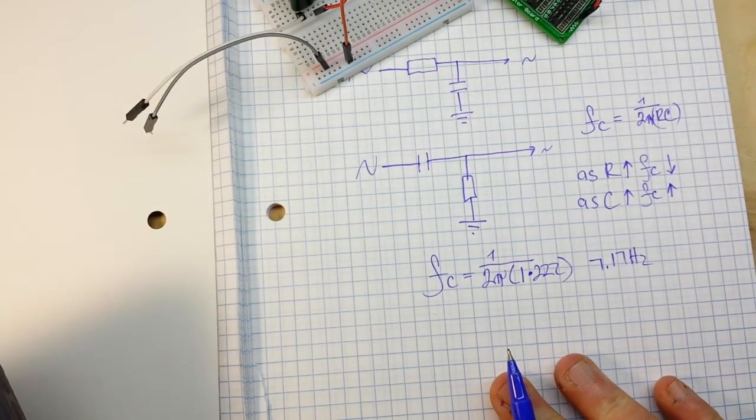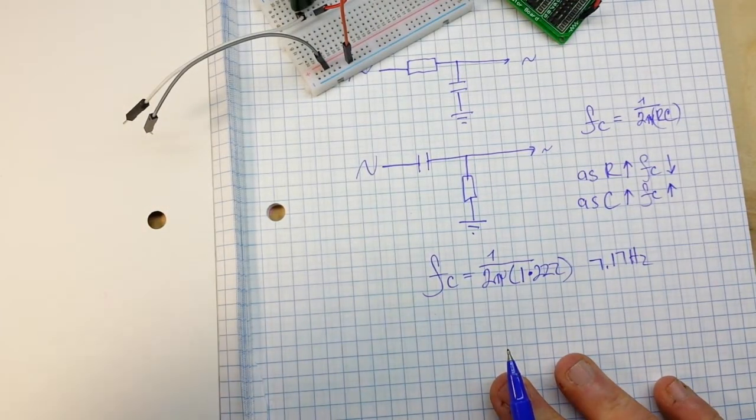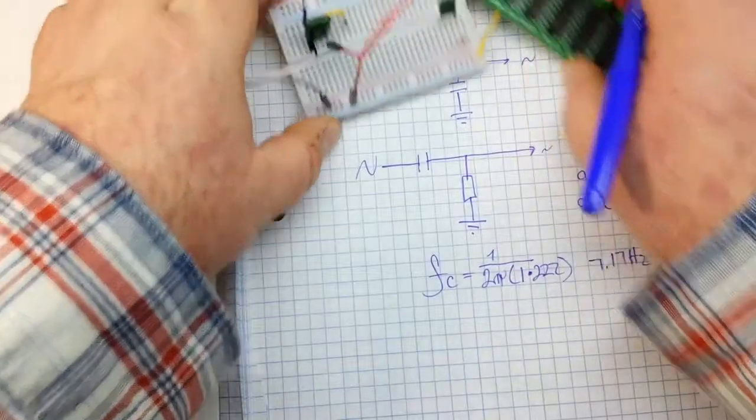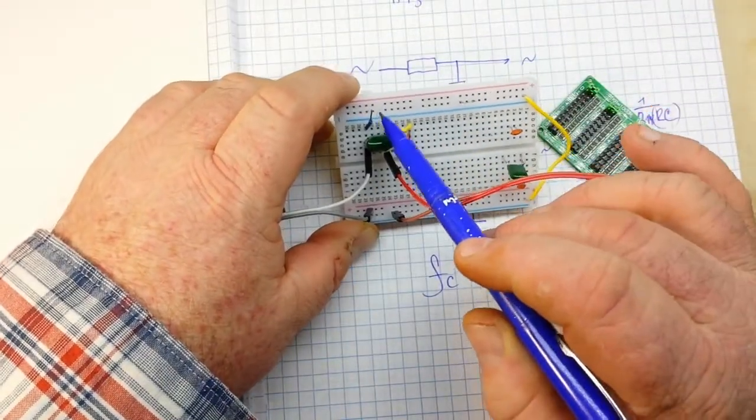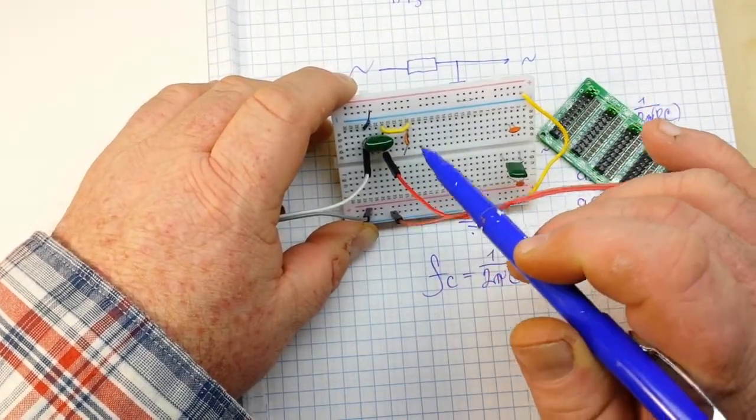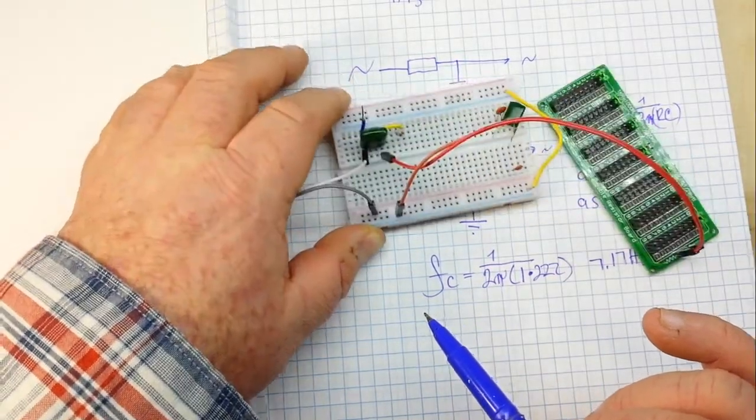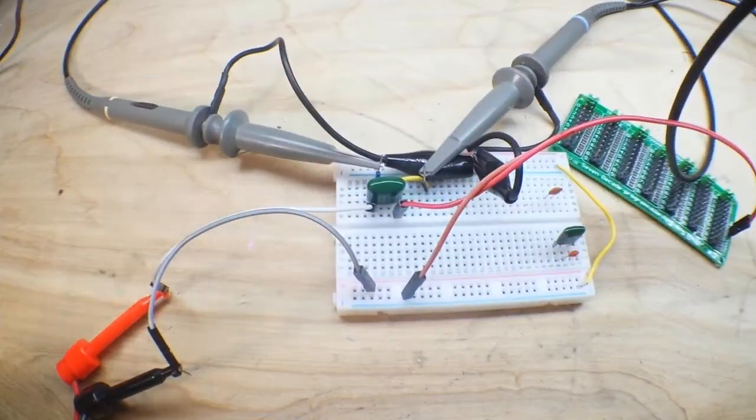So there's the math. There is the concept and the theory. Now let's do it practically. Put a frequency generator into this and oscilloscope on it. If you look here I've got a point for our input frequency and a point for our output frequency.